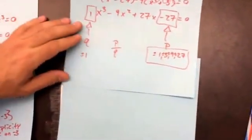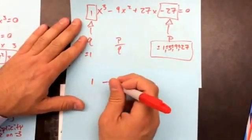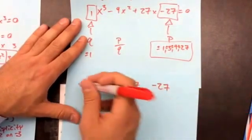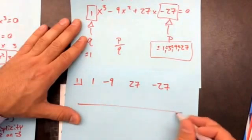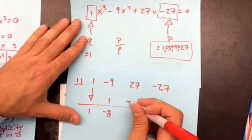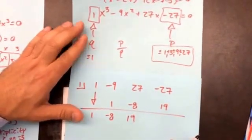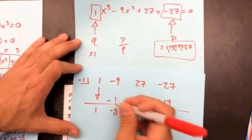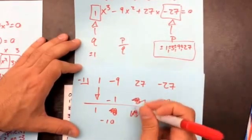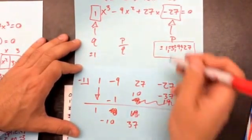I'll use synthetic division to test which possible root actually works. The coefficients of x³ − 9x² + 27x − 27 are 1, −9, 27, −27. Testing positive 1: bring down, multiply, add — this gave a remainder, so it doesn't work. Testing negative 1: same process — this also gives a remainder, so negative 1 is out.